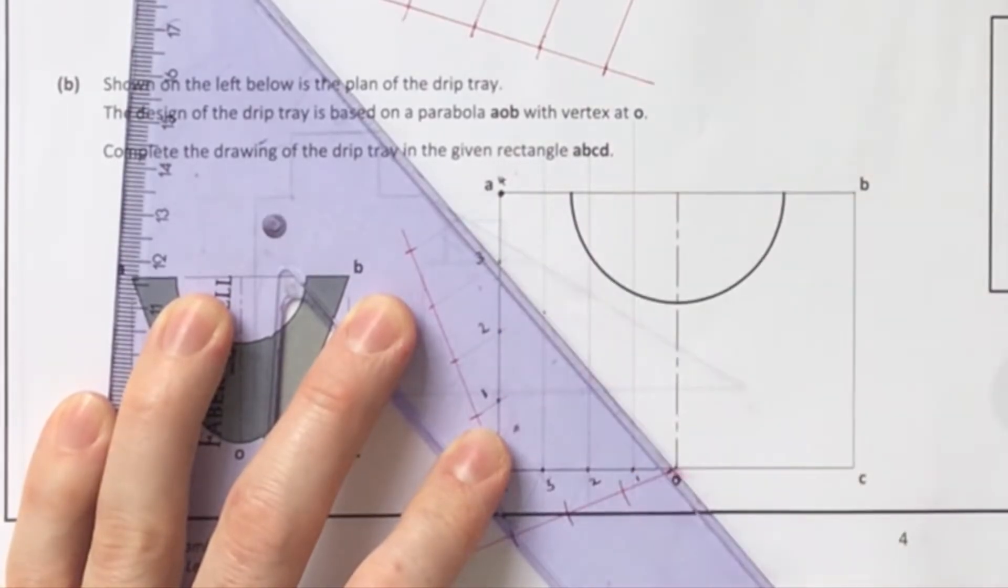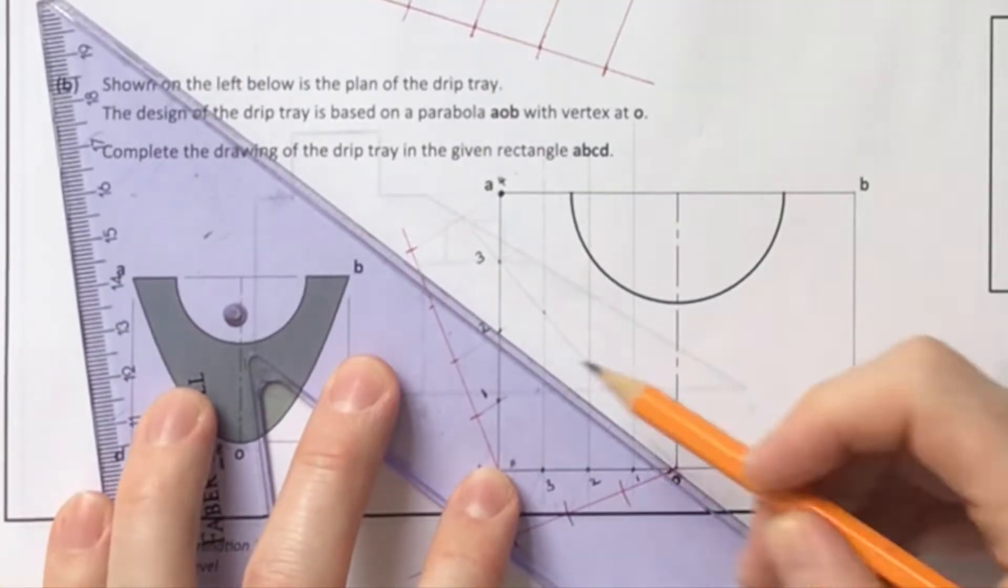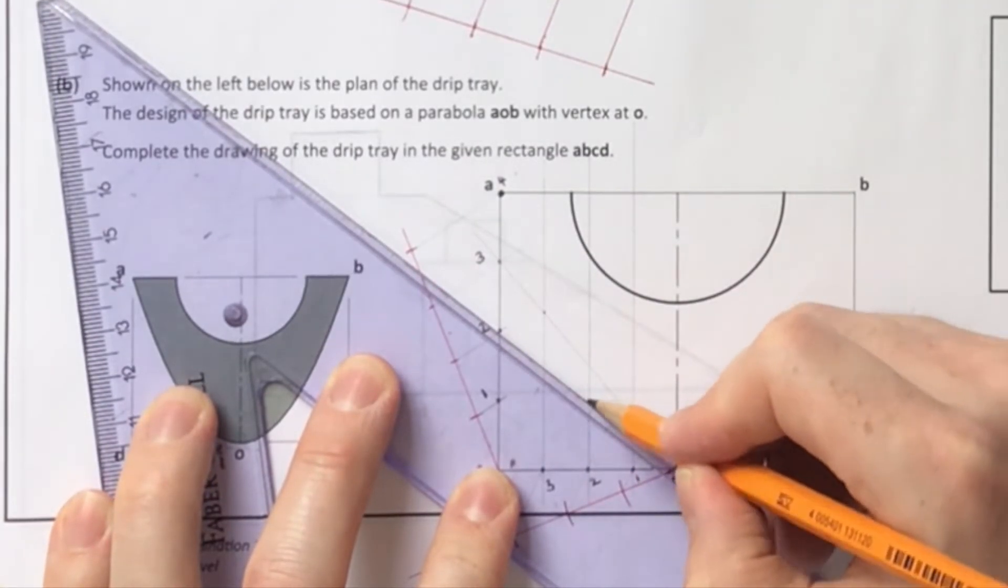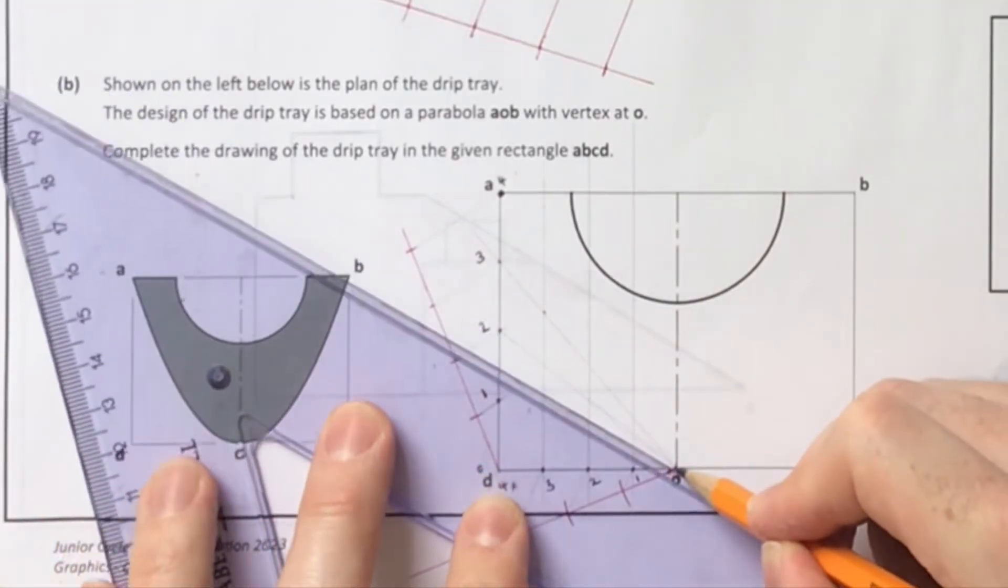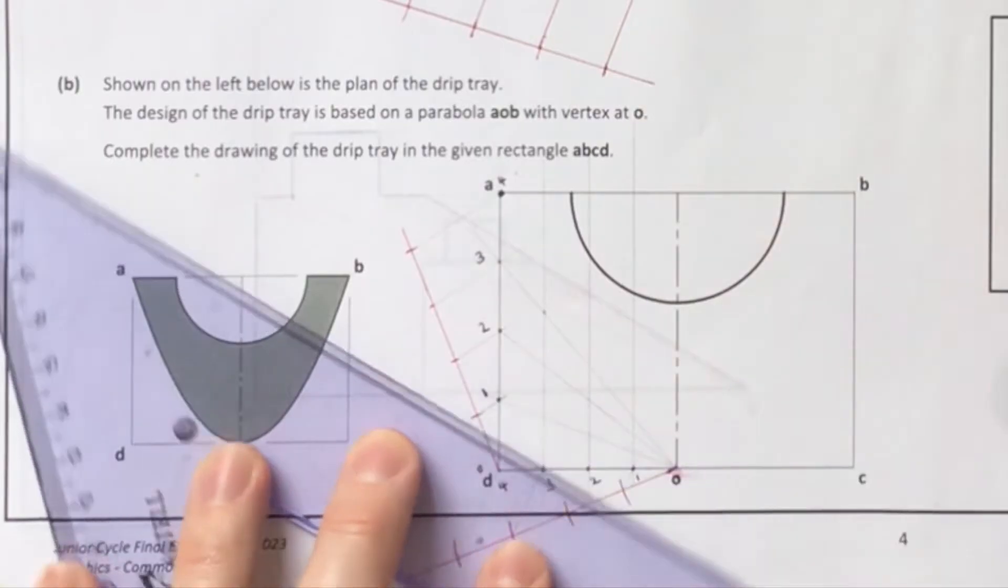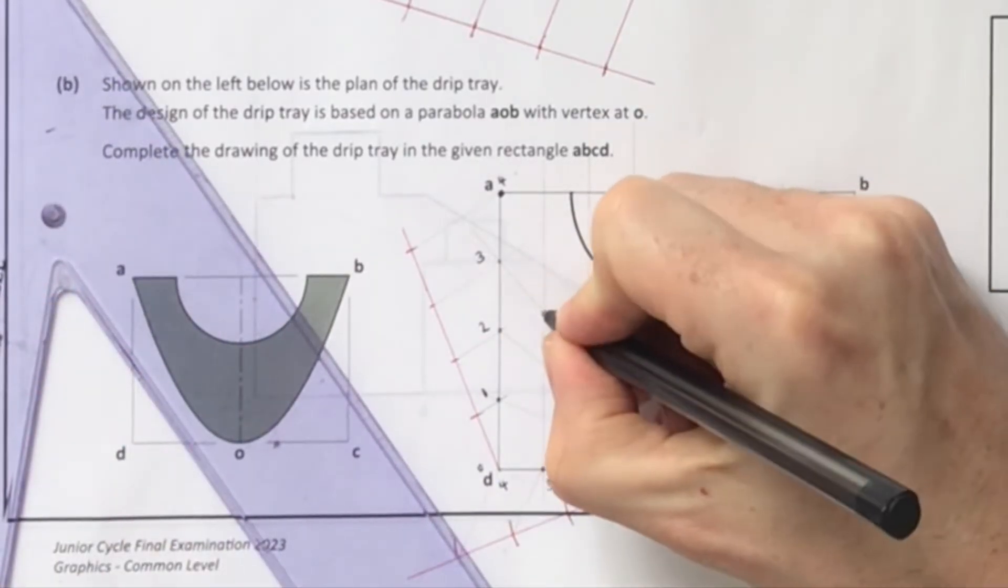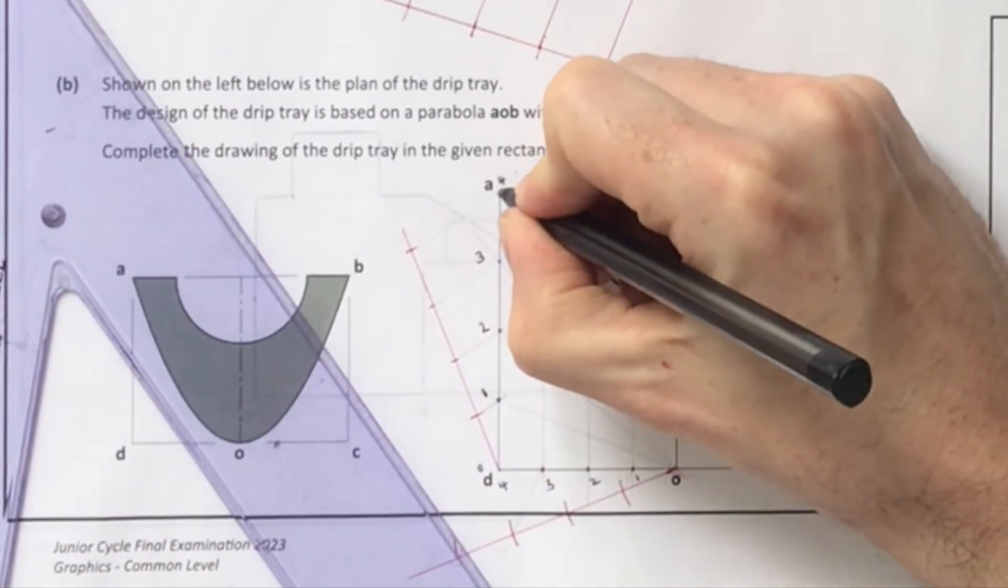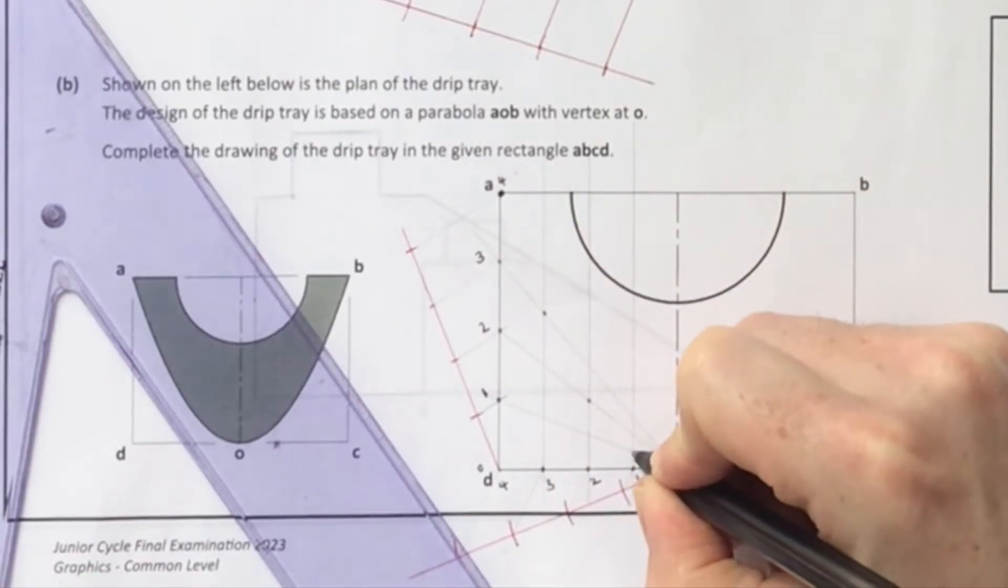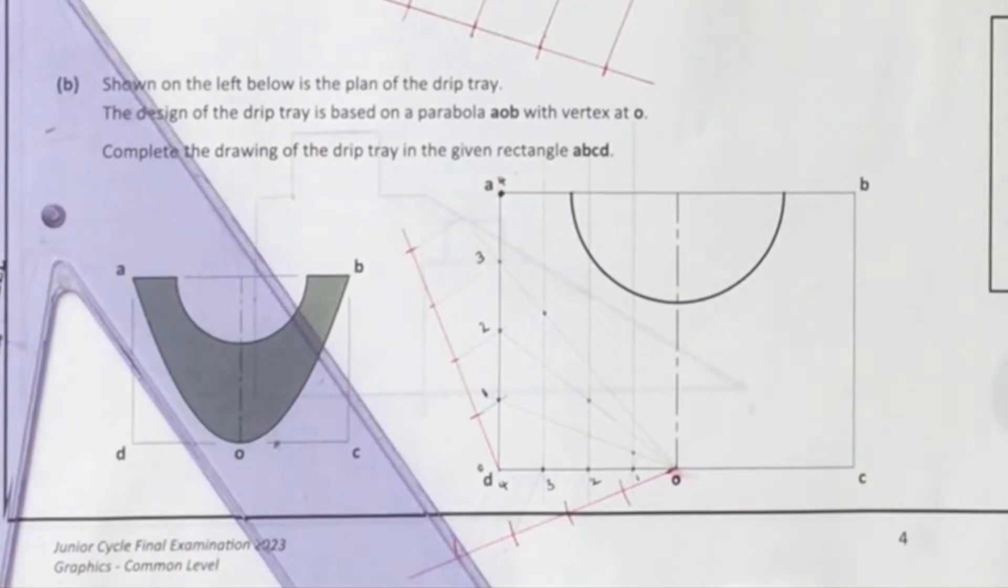All I'm doing is joining 3 back to 0. Where that crosses the third vertical line gives us our point in our parabola. Then 2, where that crosses the second vertical line, gives us a point in our parabola. And then 1, where that crosses the first vertical line, gives us our second last point on our parabola.